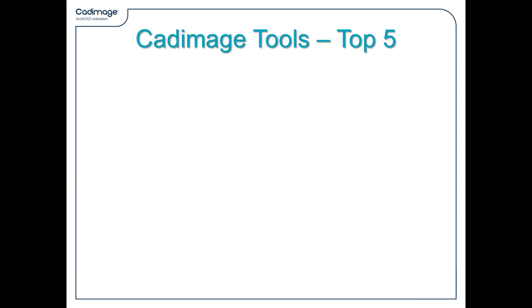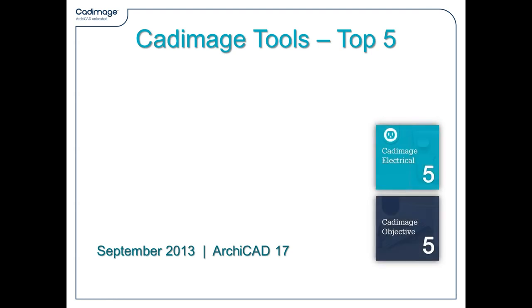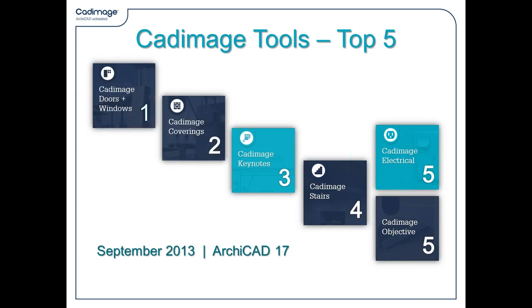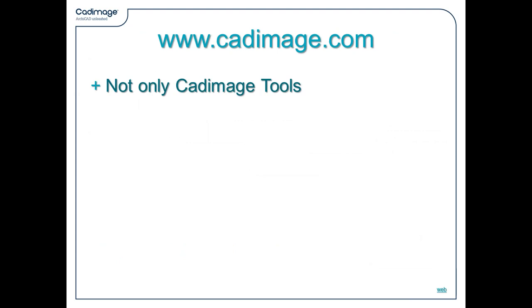I'm going to look at the top five tools in just a second — actually the top five is six. Based on the most up-to-date figures, the number five best seller is actually tied between Objective and Electrical. Number four is Cadimage Stairs, then Keynotes, Coverings, and the top seller is Doors and Windows. I'm going to take a brief look at all of these. If you want more detail, you can take a look at the Cadimage website, cadimage.com.